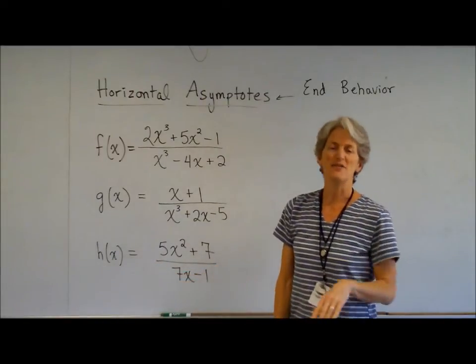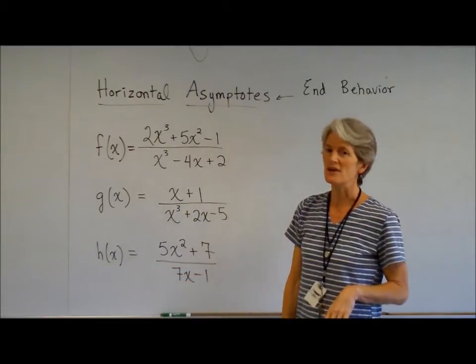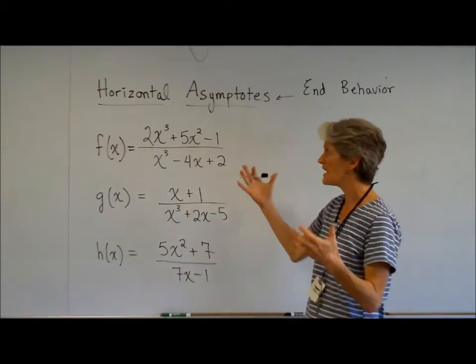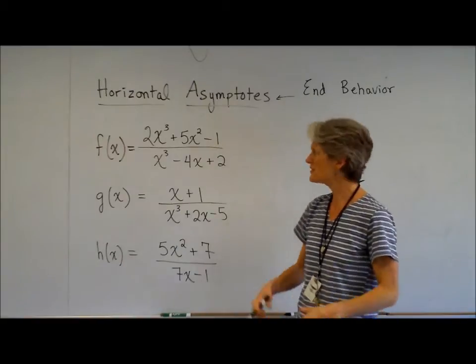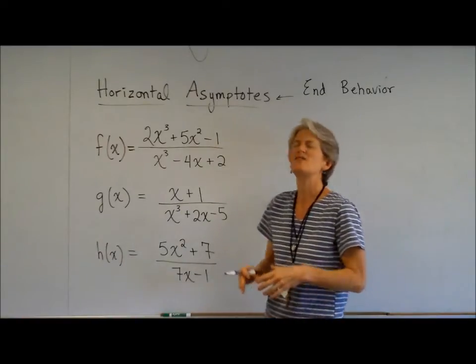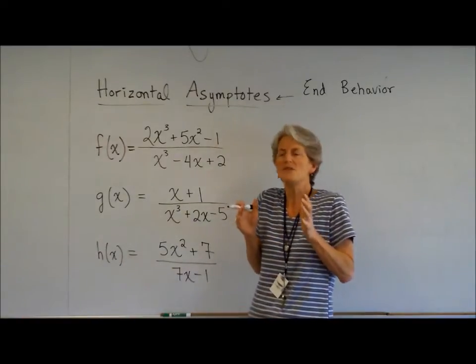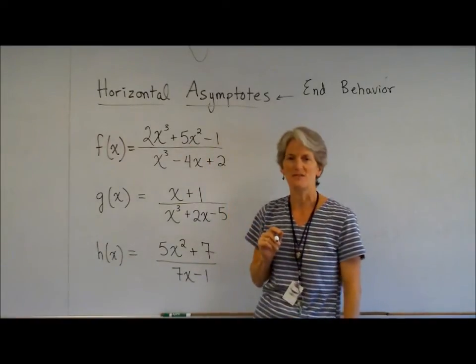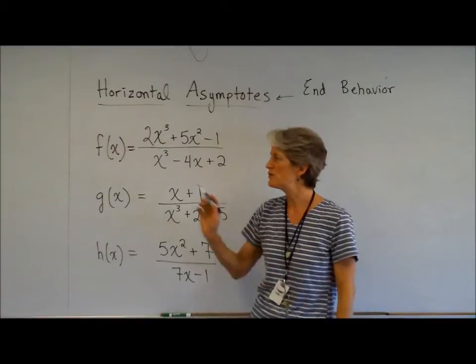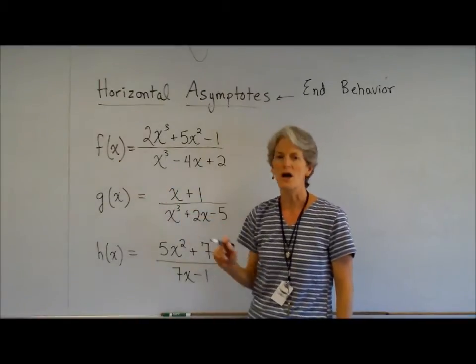We'll come back and talk about the middle stuff later. But for now, for horizontal asymptotes, we're just going to be looking to see what happens when I'm plugging in a super big X or a super, super small X — really, really negative or really, really positive.